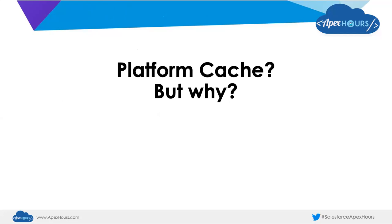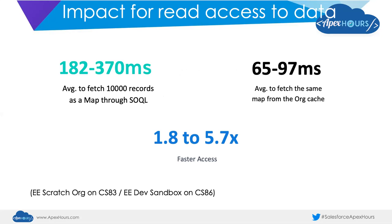The question is: why cache? When you consider what the platform does when you open a record, it already uses caching. When you develop Lightning components, you have to disable the cache to see your changes immediately. The answer is in access to data. If you retrieve records through SOQL, it takes time. But if you put data in a cache — which is memory instead of a database — it's retrieved much faster. It's a key-value storage: you bring a key and get the value in return.